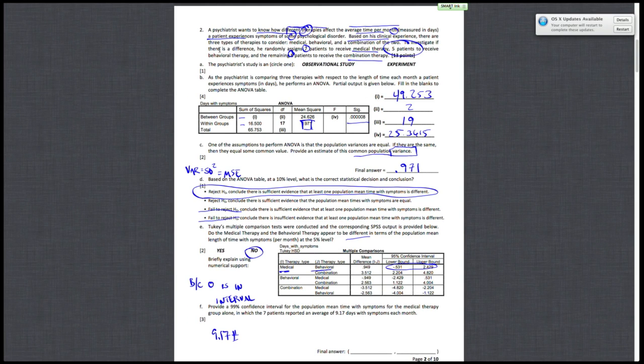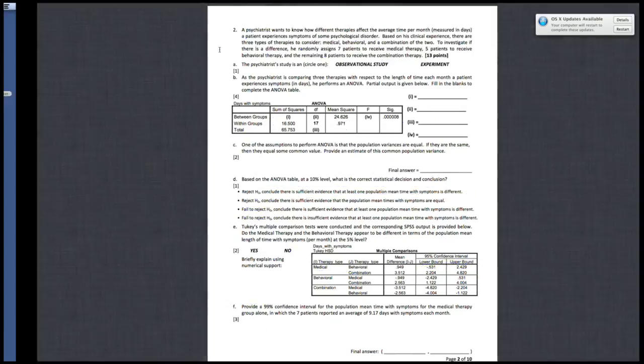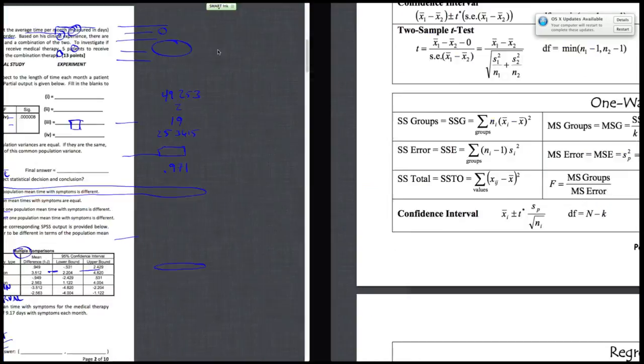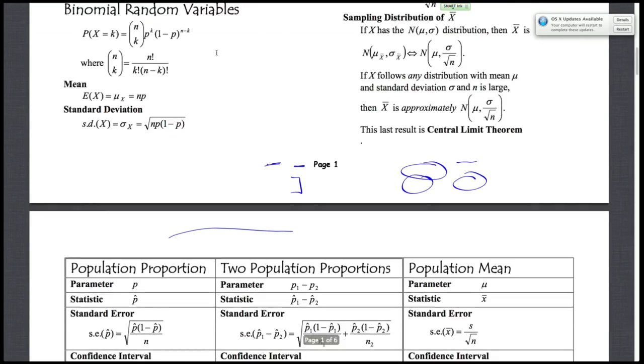Let me erase that, it's a little messy. Plus or minus Z star. And our Z star for a 99% confidence interval is something I can find from the yellow card. If I scroll up, scroll down rather, to table A2, which is going to be on its side. Sorry about that.